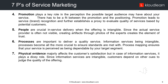Number five, people: people are crucial in service delivery when the offering is intangible. Since the actual service provider is often not visible, creating artifacts through photos of the experts creates the element of trust. Number six, processes: processes are important to deliver a quality service. Information services being intangible, processes become all the more crucial to ensure standards are met. Process mapping ensures that your service is perceived as dependable by your target segment.